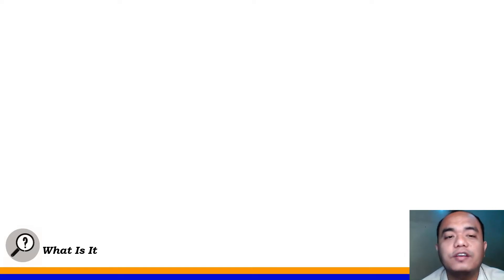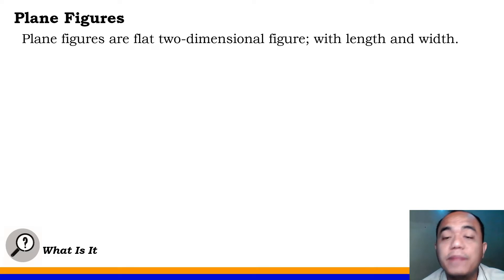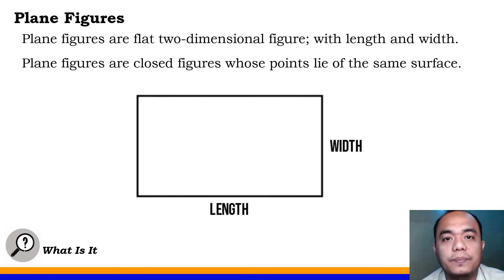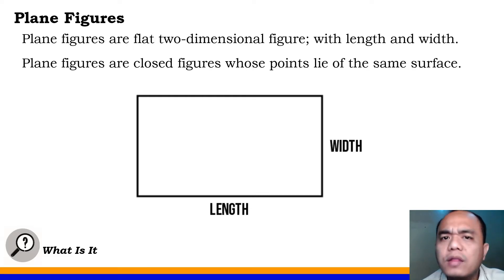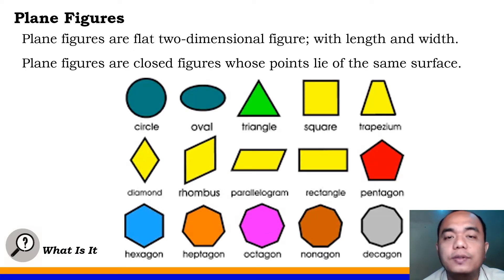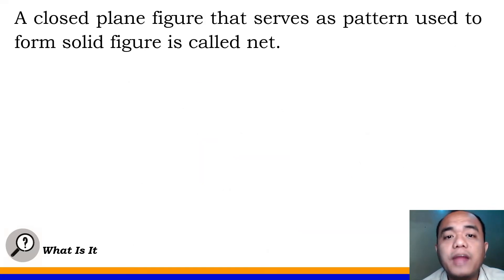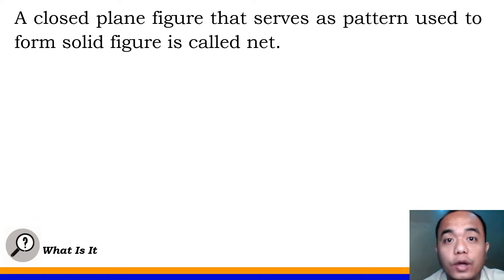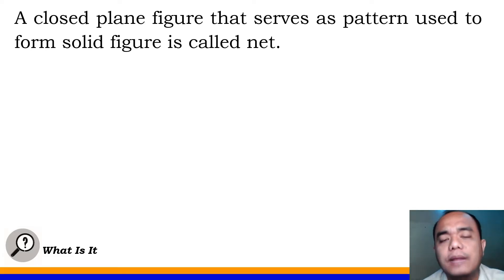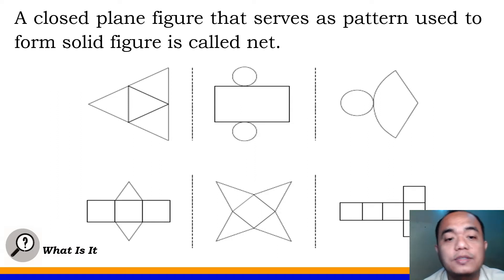Now, let's define first plane figures. Plane figures are flat two-dimensional figures. Plane figures have two dimensions only — namely the length and the width, as shown here on the screen. Plane figures are also defined as closed figures whose points lie on the same surface. Here are some examples of plane figures. A closed plane figure that serves as a pattern used to form solid figures is called a net, or nets.